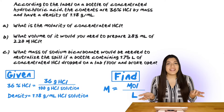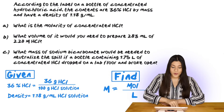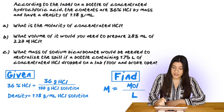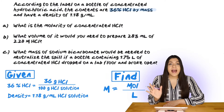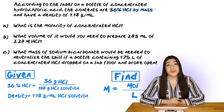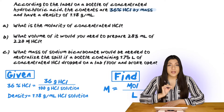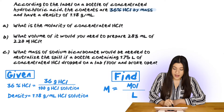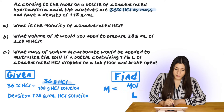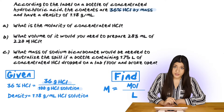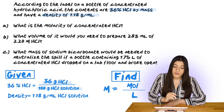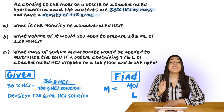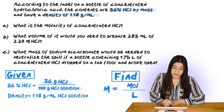Let's identify what we're given and what we're finding. We're given 36% HCl by mass. Whenever you see this percentage by mass, that's going to act as your conversion factor. We're going to split this apart: 36 grams of HCl on top and 100 grams of HCl solution on the bottom. We're also given our density of 1.18 grams per milliliter, which is specifically of the HCl solution.